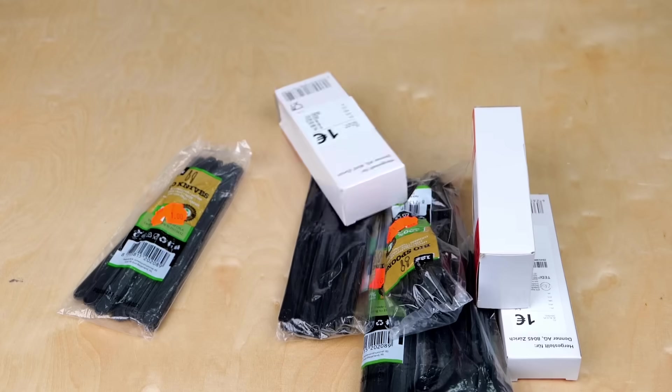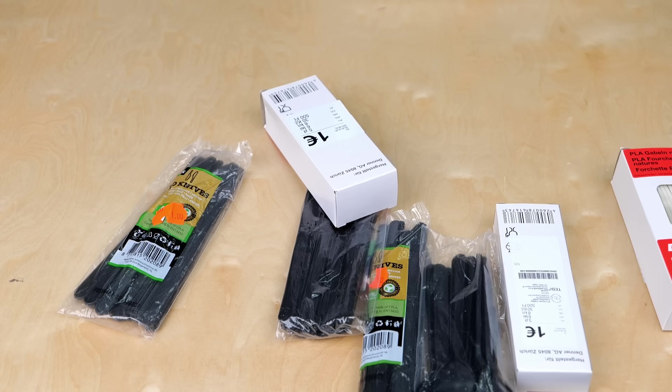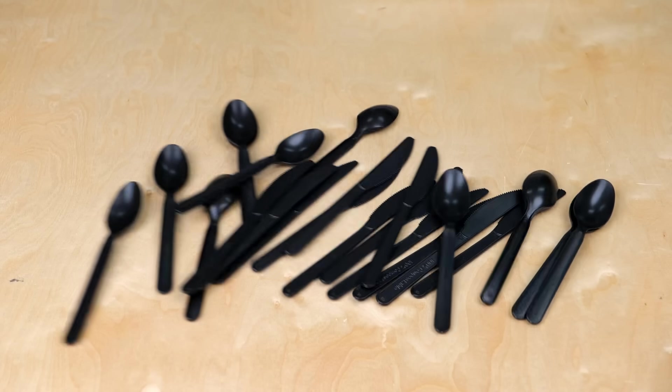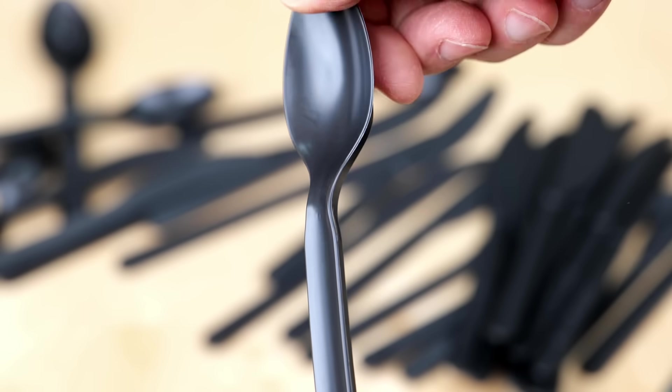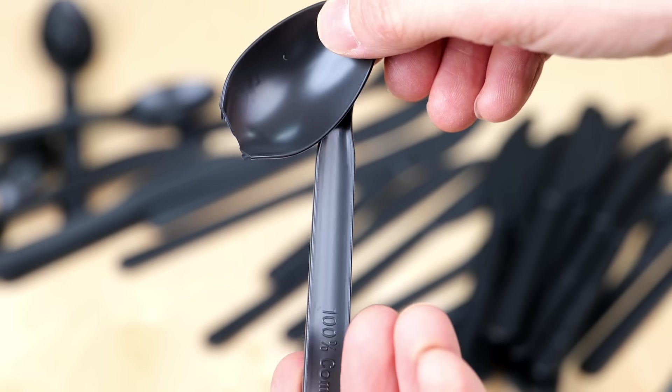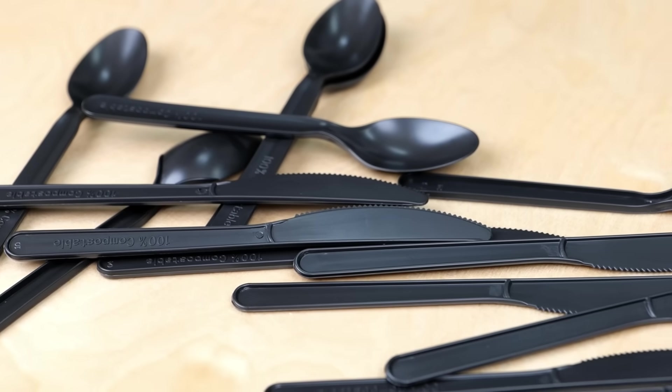So I went to one of our dollar stores, or rather, 1 euro stores and got a couple of packets of compostable cutlery. Both said PLA on the packaging, so this should be a good start for the test. The not so great start was that these utensils felt really brittle and I don't really want to know how you could even eat with them. But let's see if this also translates into the filament.